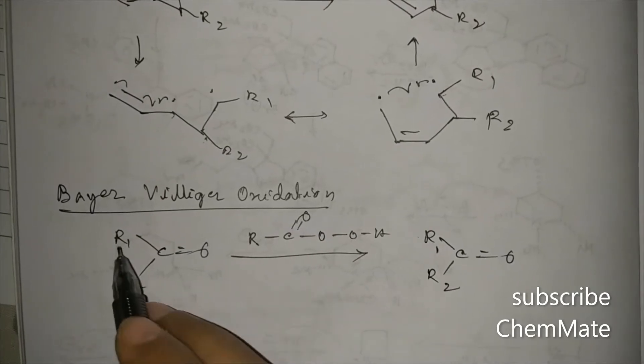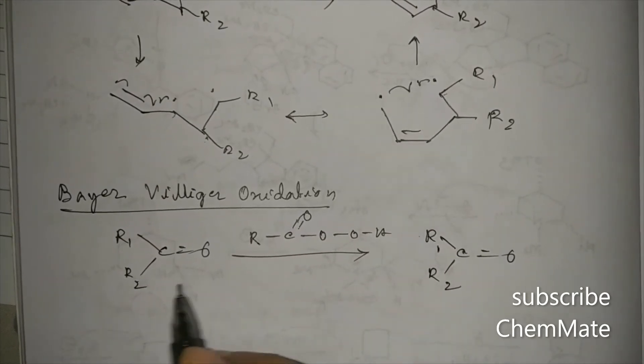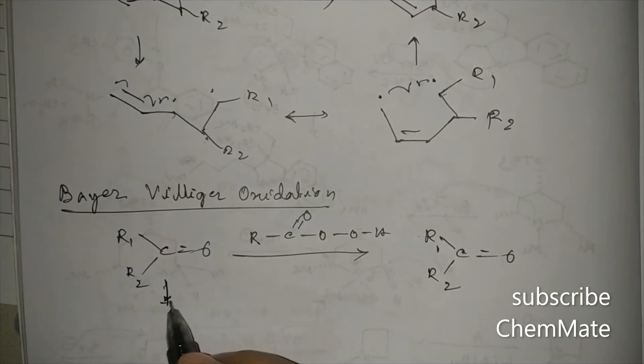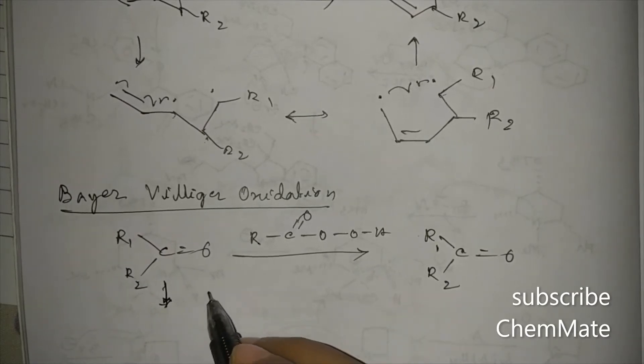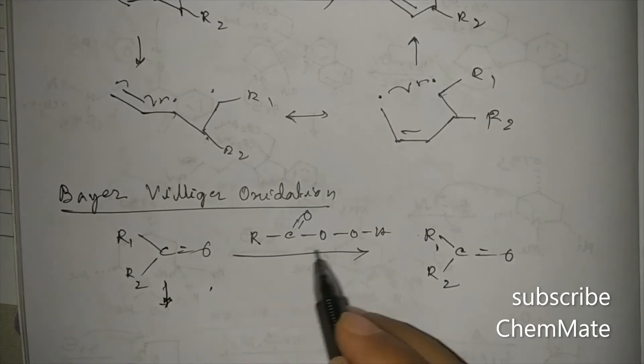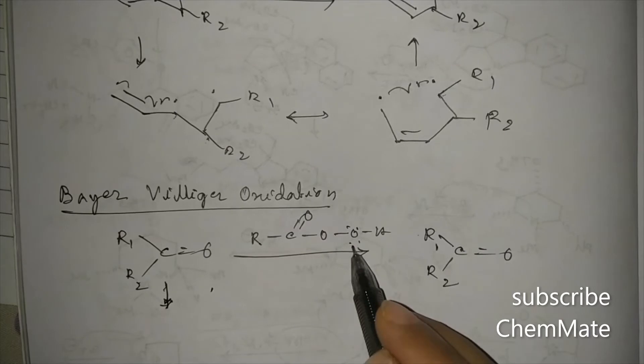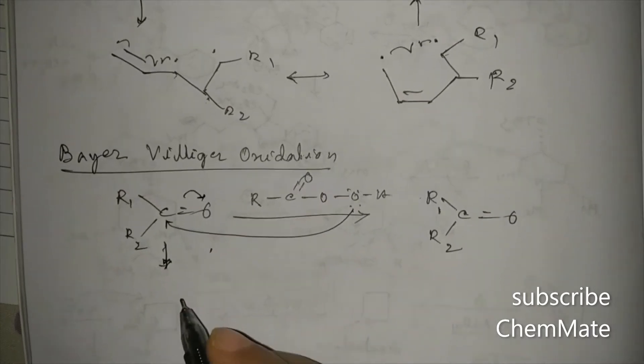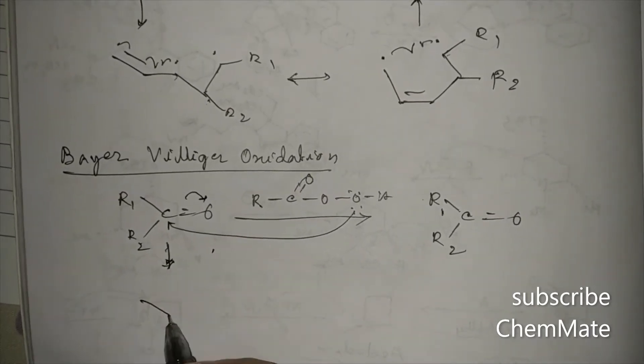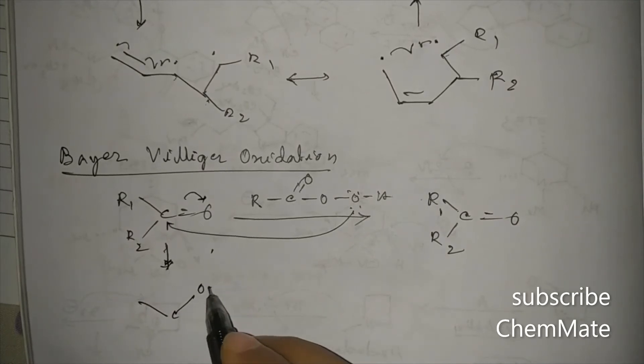So if two different groups are there, we'll draw the mechanism in very short. So it will attack this center, into this carbonyl compound, and that will form a tetrahedral intermediate.